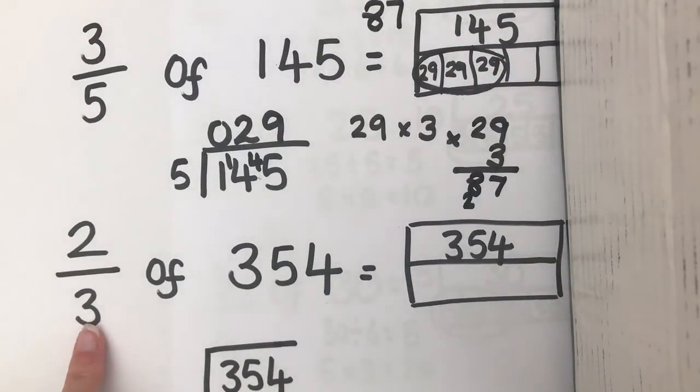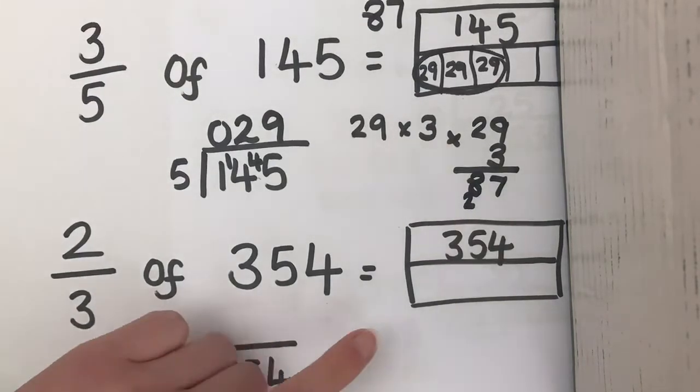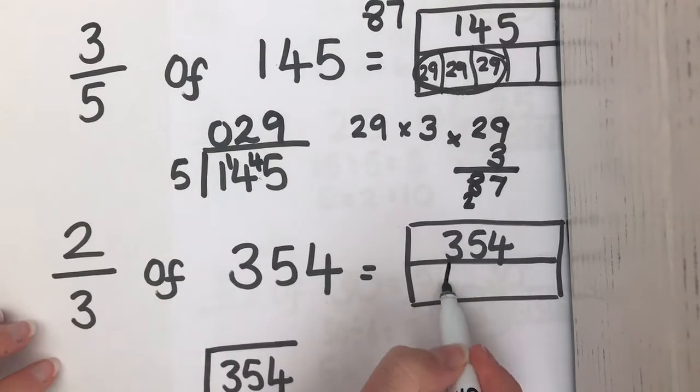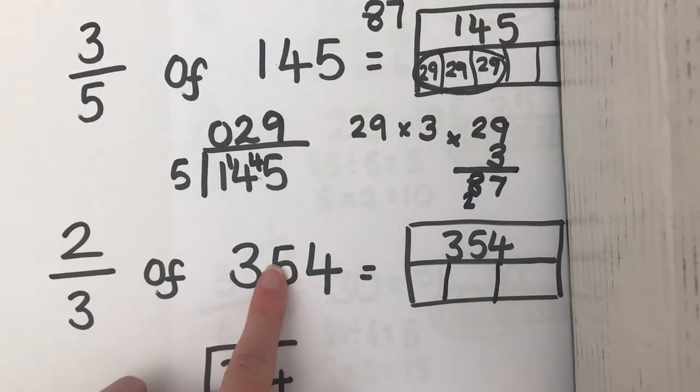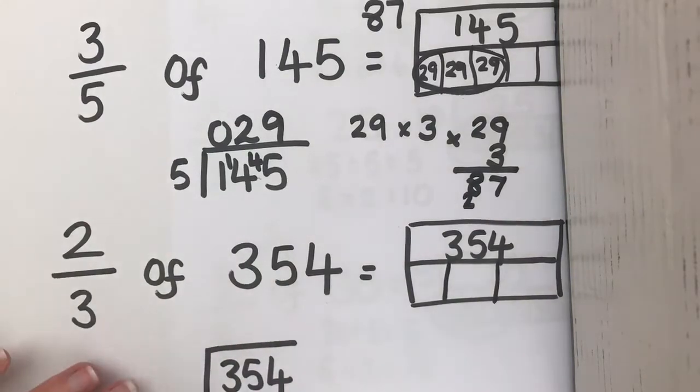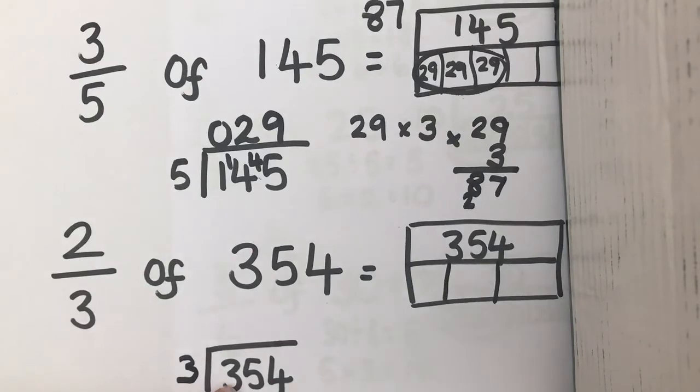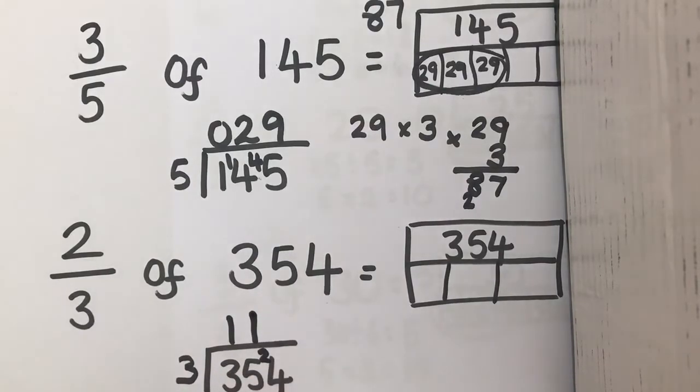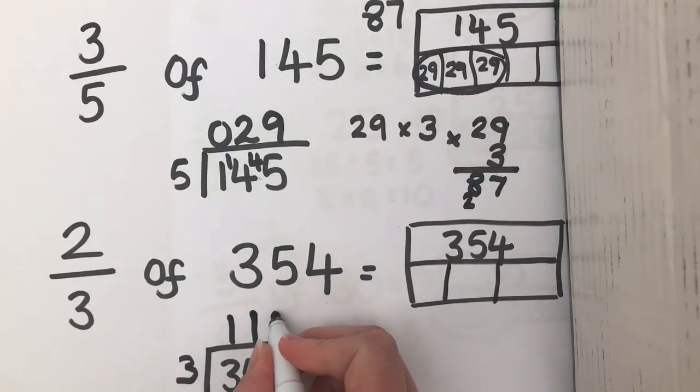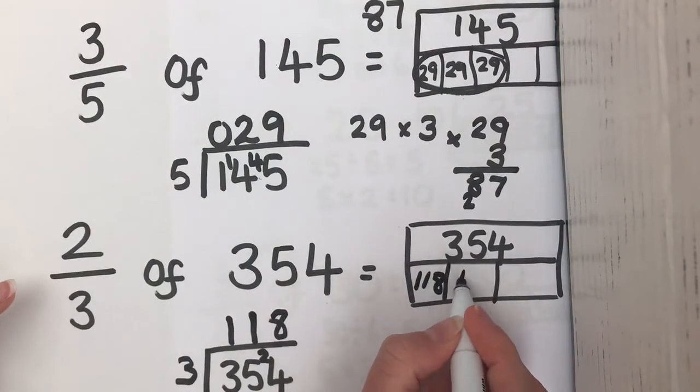And lastly, we've got 2 thirds of 354. So, we're working with thirds. So, we're going to split our bottom bar into 3. And to find out what each one is worth, we need to divide 354 by 3. So, I'm going to use the bus stop method. How many threes are in 3? 1. How many threes are in 5? There's one whole group of 3 with a remainder of 2. And how many threes are in 24? 8. So, each one of these is worth 118.